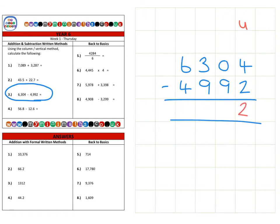Then our tens column, now we have zero tens take away nine and we can't do that, so we need to move to the hundreds column and borrow a hundred from here and bring it back to the tens. So now we have ten tens take away nine tens, which gives us a single ten.